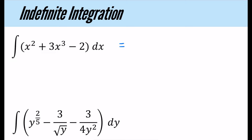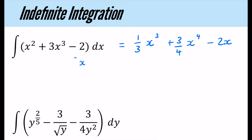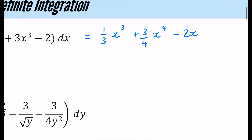First we have X squared. We increase the power by one and divide by the new power, giving X cubed over 3. For X cubed, increasing the power gives X to the four, divided by four. For the constant 2, it's like 2X to the power of zero — increasing the power by one and dividing gives 2X. And of course, for integration we finish with plus C, because any constant would disappear on differentiation.